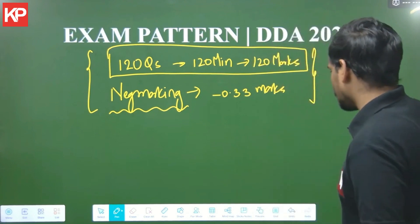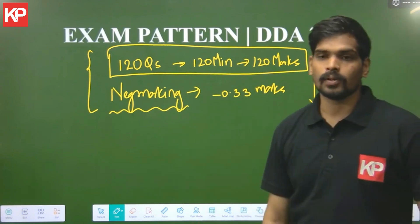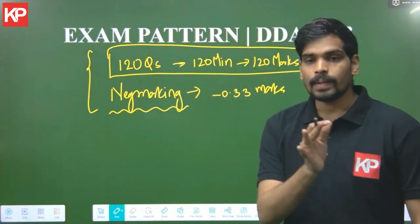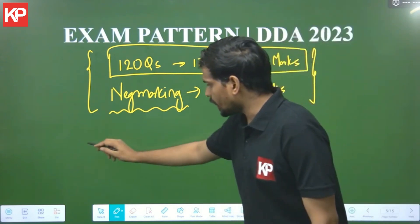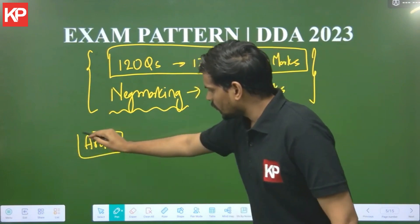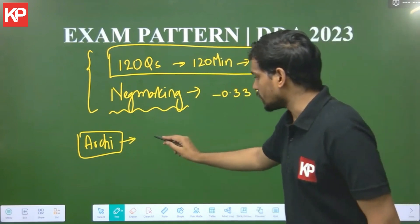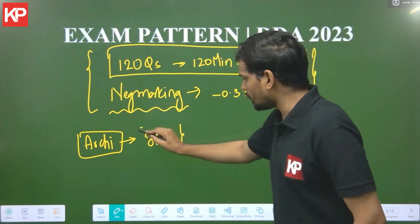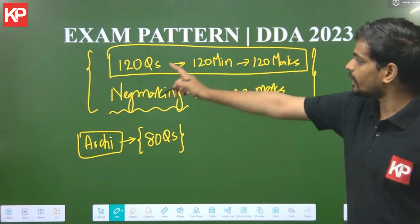As far as the syllabus is considered, let me also tell you the distribution of these 120 questions will be among two parts or five parts to be more specific. The first part that is architecture-specific concepts. The syllabus of architecture will be having a total of 80 questions, majority of the question paper. 80 questions will be from architecture-based topics. The remaining 40 questions, total is 120.